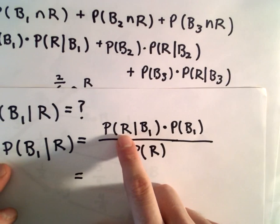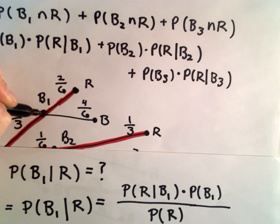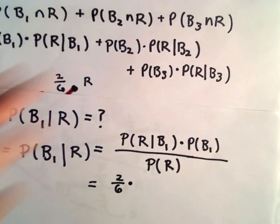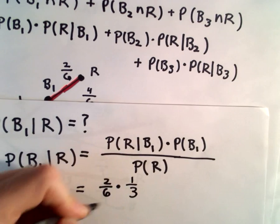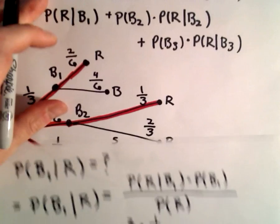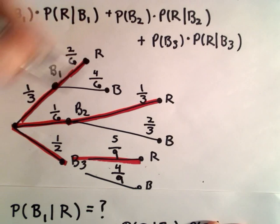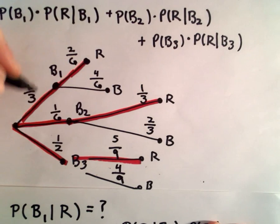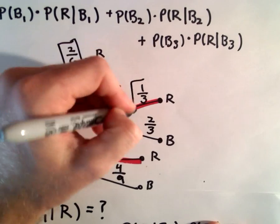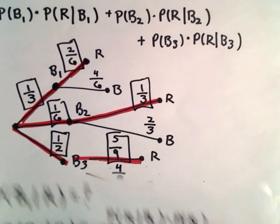We already figured out the probability of getting a red coin given that bowl one was selected. We said that that was two-sixths. So given that bowl one is selected, the probability of getting a red coin was two-sixths. And the probability of getting bowl one in the first place, we said that was simply one-third. Now, the probability of getting a red coin, we figured that out in part A. But in terms of our tree diagram, the probability of getting a red coin, we just follow every branch out to where we stop at the event of getting a red coin. We multiply those probabilities together and then we add along the branches.